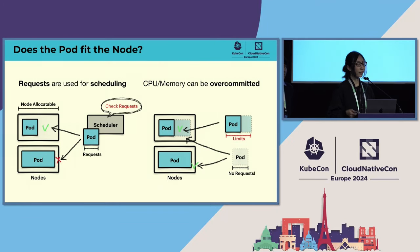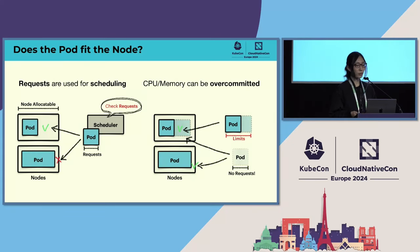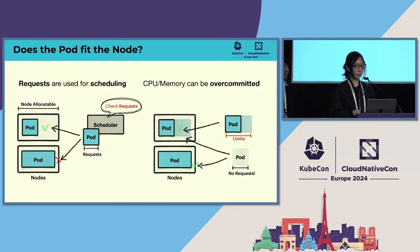Let's think about scheduling. The scheduler uses resource requests to check if the pod fits the node. As the left diagram shows, if the pod's requests satisfy the available resource, the scheduler assigns the pod to the node.